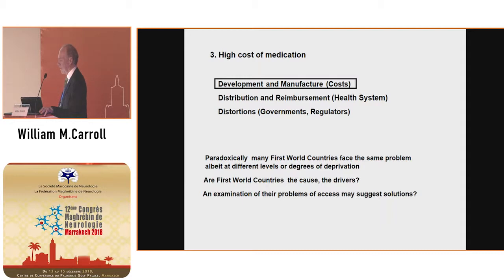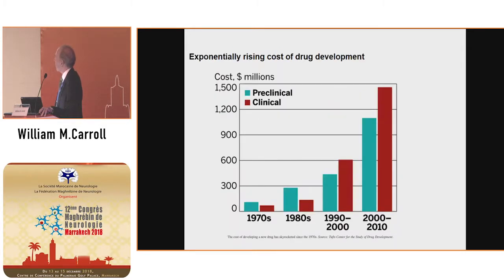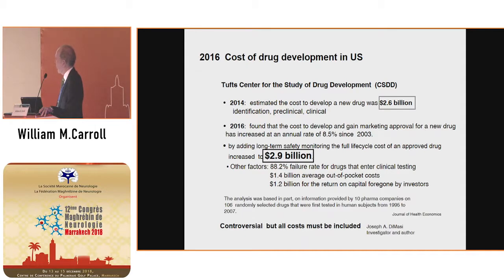Turning now to high costs of medication as a cause of inequities of access — this is not just a problem of less well-resourced countries, but also some highly-resourced countries. It's likely to be driven by first-world countries. The cost of developing a new drug from scratch reached $1.5 billion in 2010, increased to $2.6 billion in 2014, and most recently up to $2.9 billion per new drug. There's a great barrier to getting new medications onto the market.